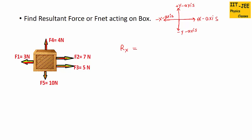So plus F2. F3 is also along positive x-axis, so it would be positive. But you can see F1 is towards negative x-axis, means towards left.